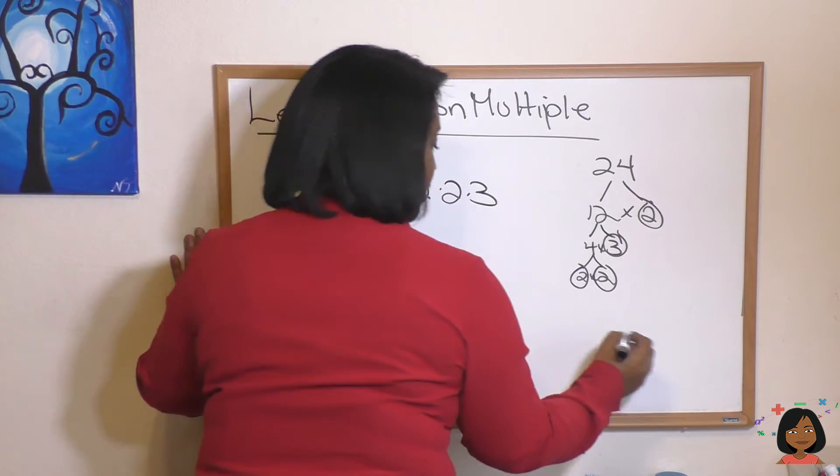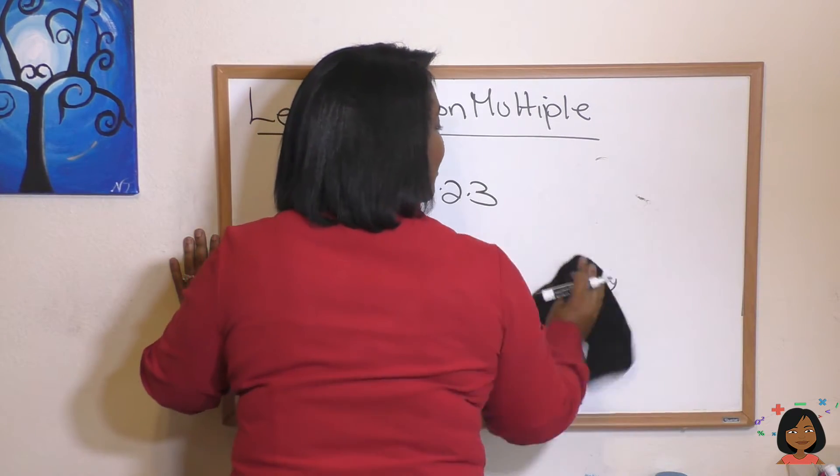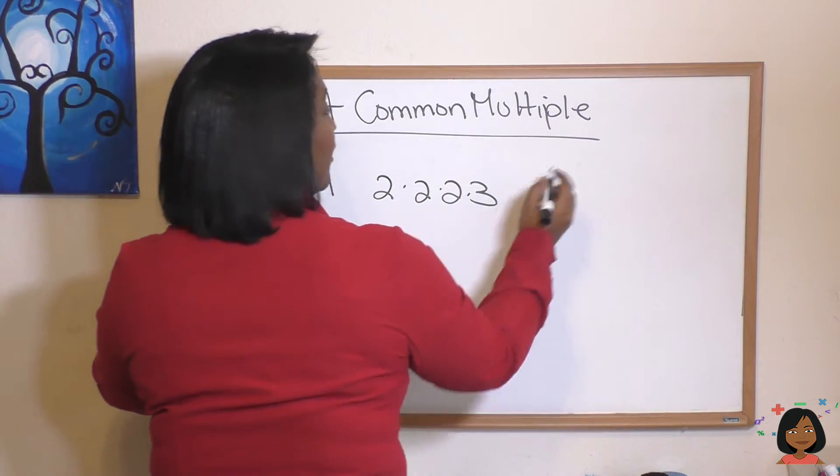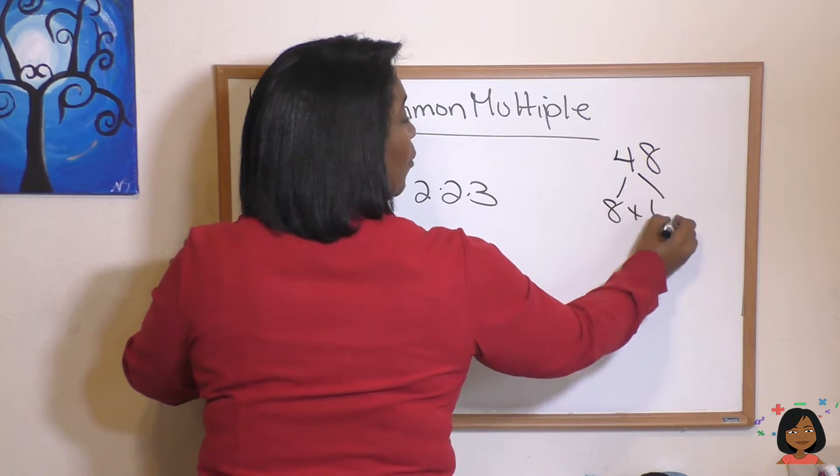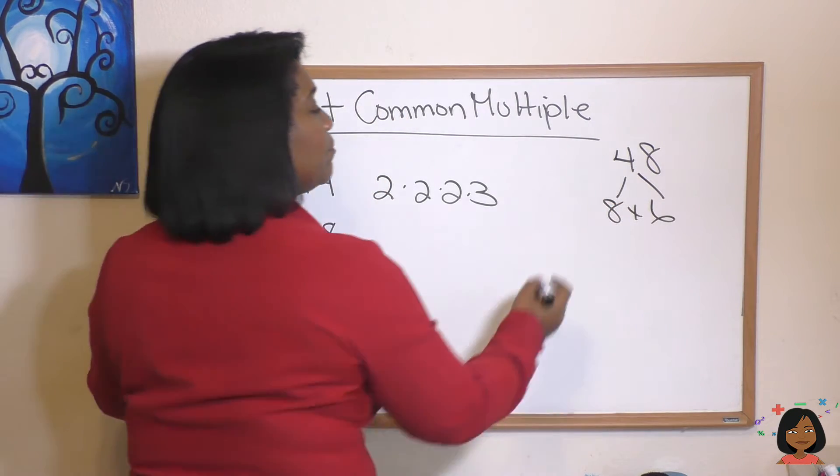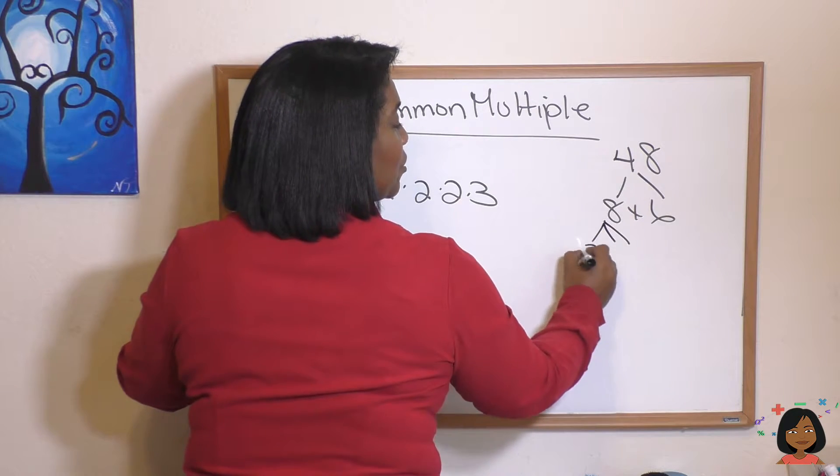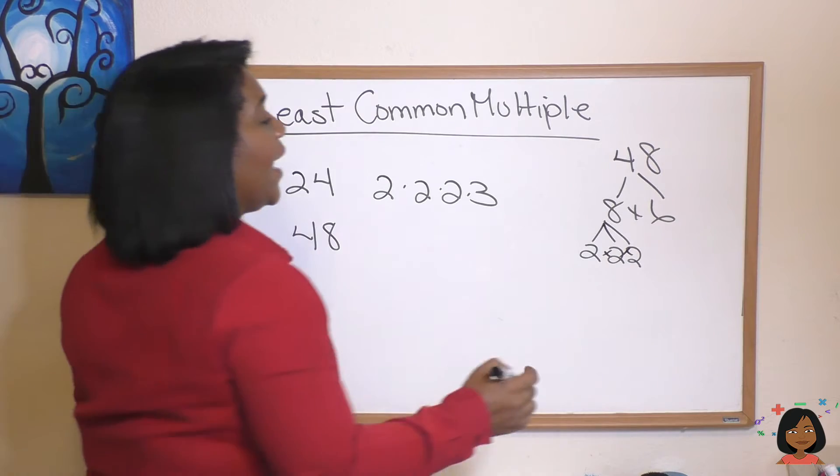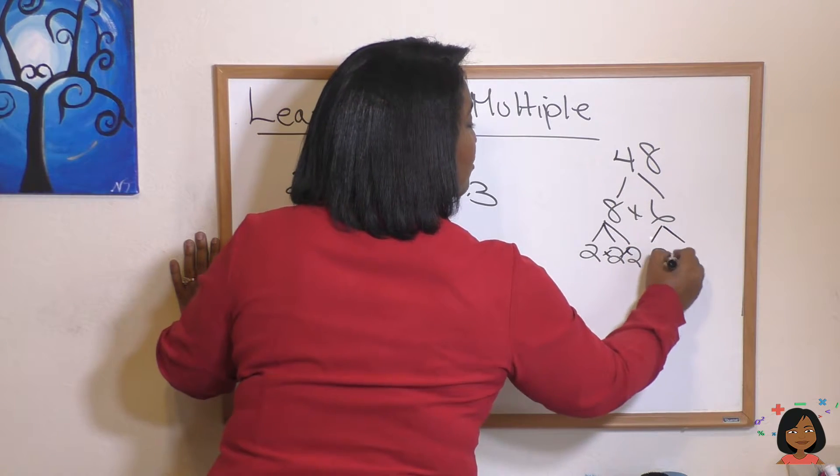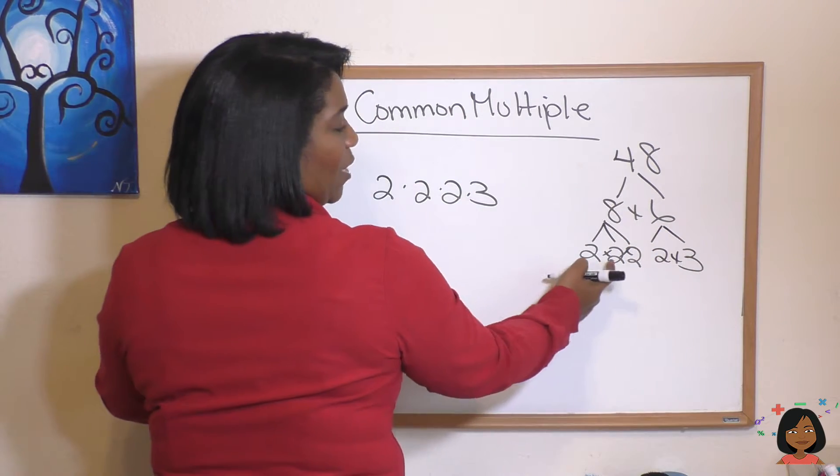Now let's try forty-eight. I'm gonna just go ahead and erase that to make my life easy. Forty-eight: eight times six is forty-eight, and we're not done—neither of those are prime. I just happen to remember two times two times two is eight. And six we know is two times three, so we have one, two, three, four twos times a three.